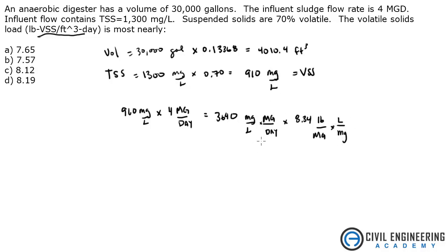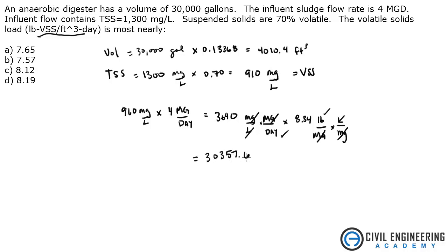These are kind of crazy units that you're dealing with in environmental problems. All we're trying to do is get it into something that the answer is in. You need to be careful working the units so that we get into something shown in the answer selection. If we look at all this, we can cancel out the liters, cancel out the million gallons, and cancel out the milligrams — all we're left with is pounds per day. Multiplying that together, I get 30,357.6 pounds per day.